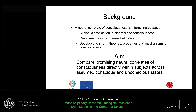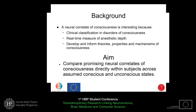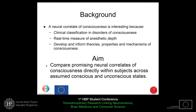A neural correlate of consciousness is interesting because it can be used as a clinical classification tool in disorders of consciousness. It can be used as a real-time measure of anesthetic depth, and it can be used to develop and inform mechanisms, theories, and properties of consciousness. Our overall aim is to compare promising neural correlates of consciousness directly against each other in a controlled experiment.